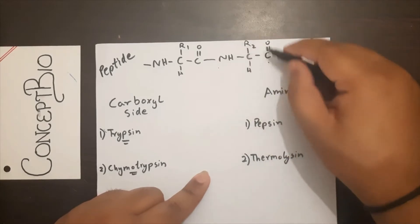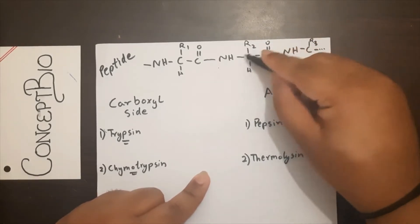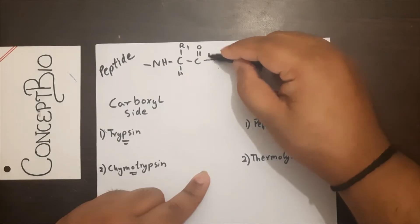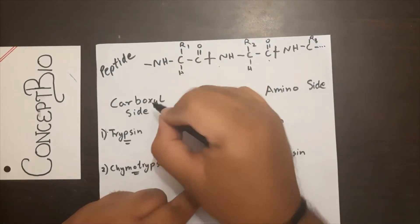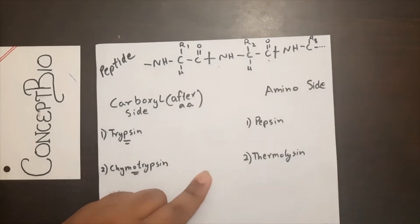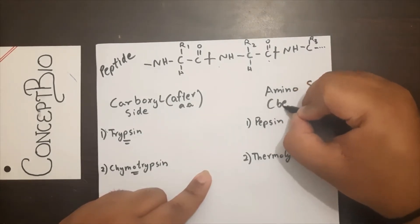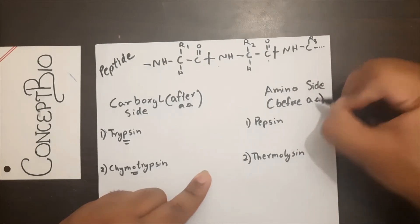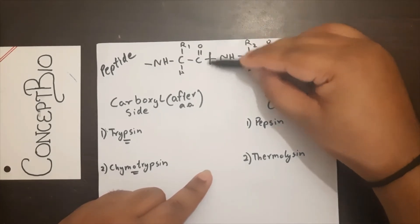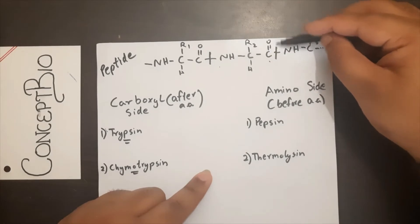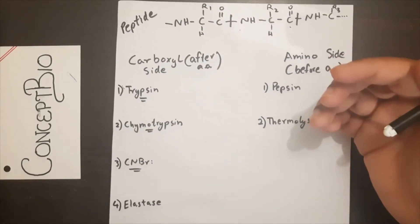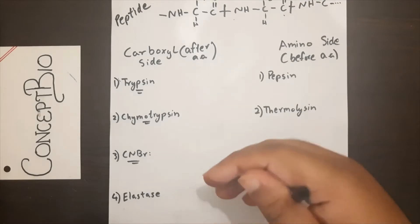Taking R2 as our reference amino acid, the carboxyl side would be after it — the enzyme cleaves there. If it's an amino-side cleaving group, it will cleave the peptide bond before it. Another way to remember: carboxyl side means it will cleave after the amino acid, and amino side means it will cleave before the amino acid. Cleaving to the left is the amino side; cleaving to the right is the carboxyl side.